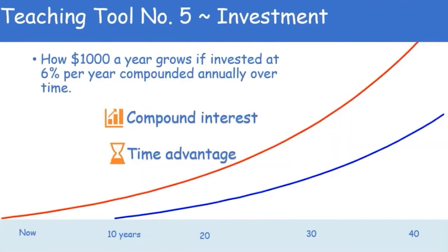The last teaching tool is investment. Look at the example: $1,000 a year grows if invested at 6% compounded annually over time. The earlier you can get your child into saving money, the more you're investing in their future. Every time they get paid through their allowance, make sure they are saving some of that money, and then with your help, they can learn about investing and growing their money.